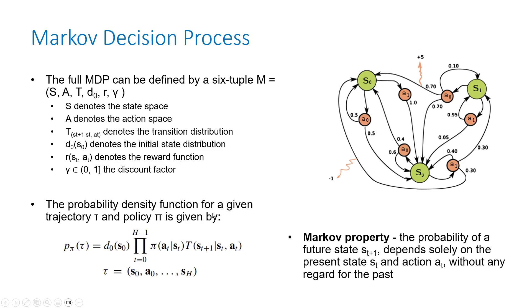The Markov Decision Process has the property that the next state solely depends on the current state and the action — there is no regard for the past, no accumulated effect.